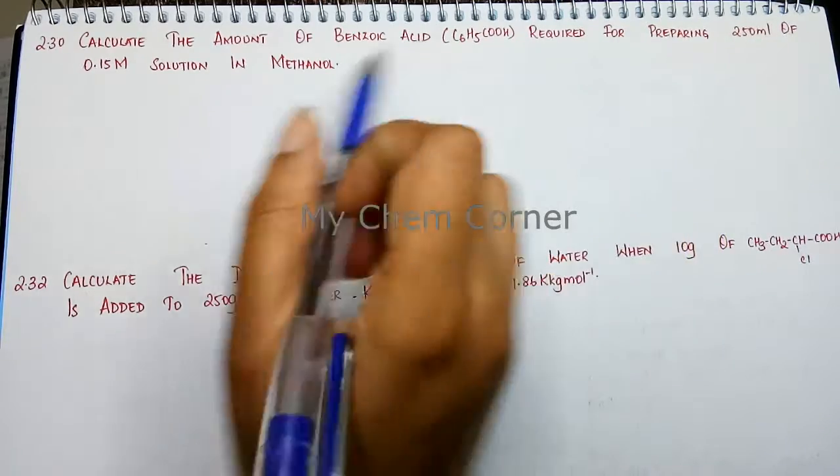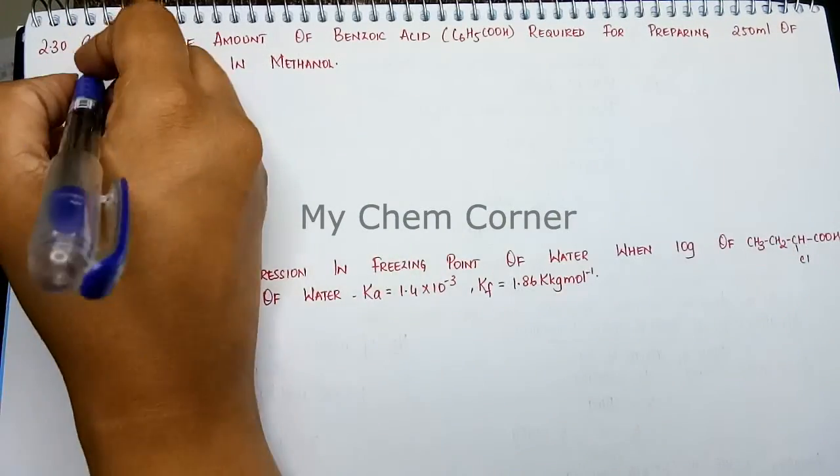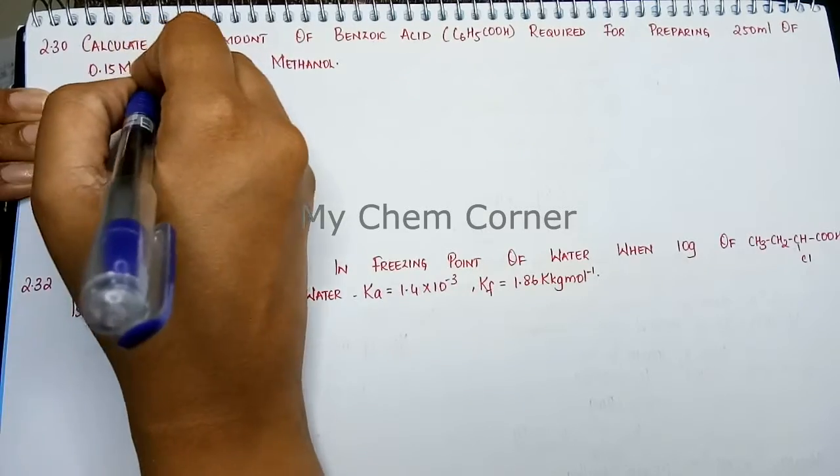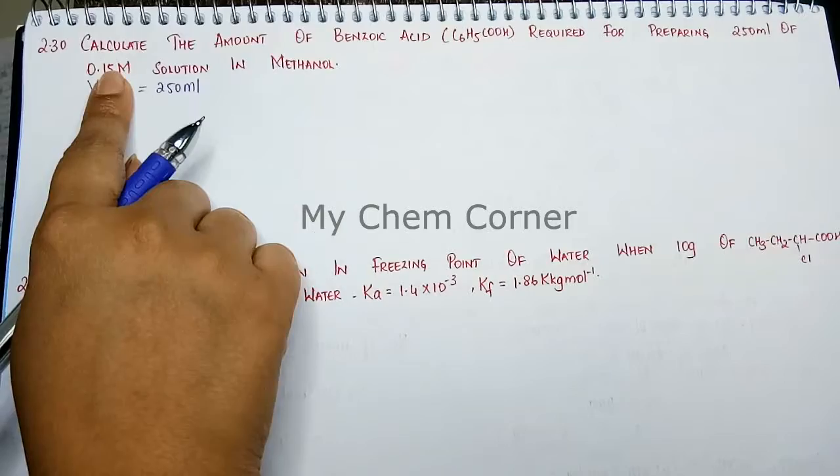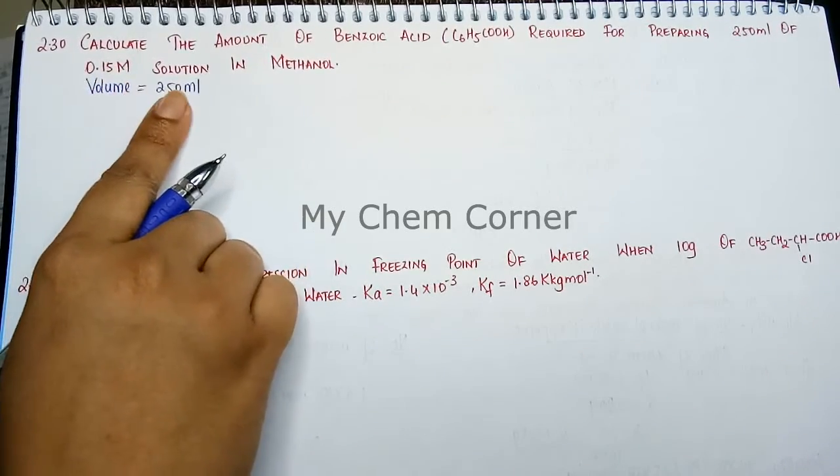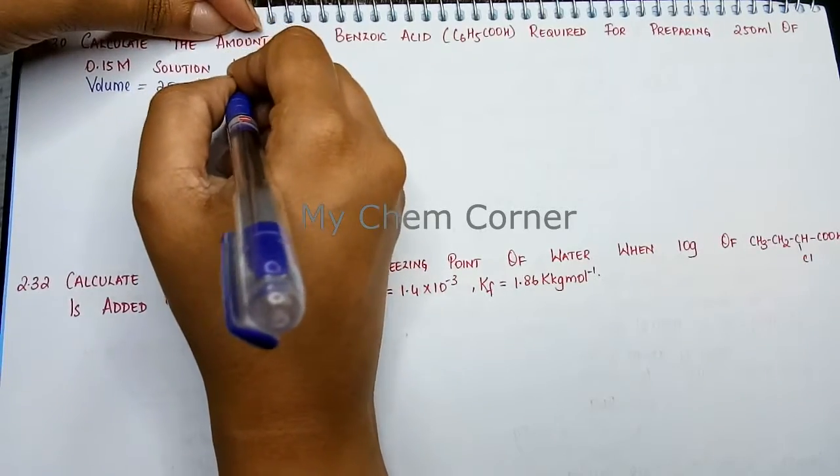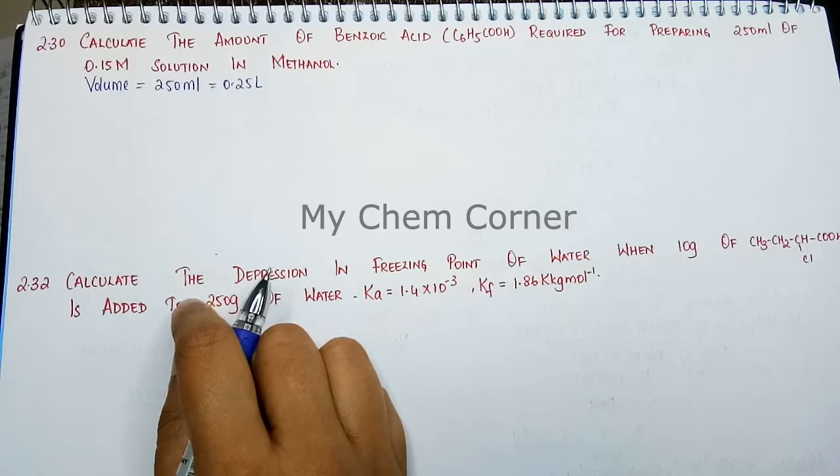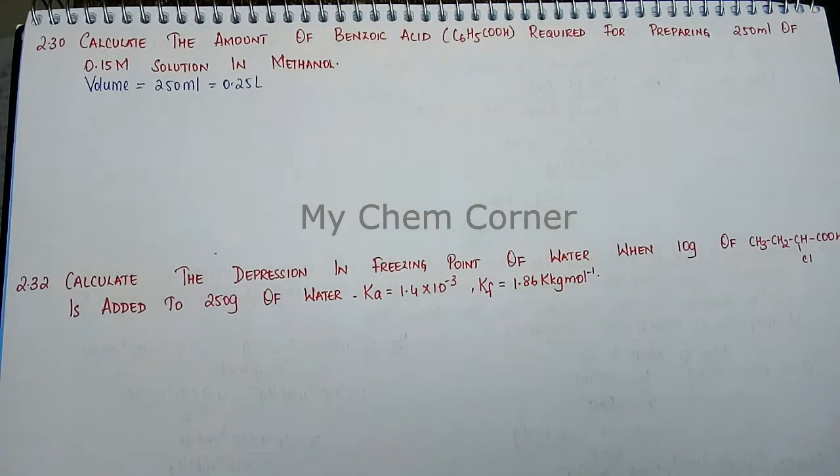First, let's write down what is given. We have the volume, which is 250 ml. Since we're looking at molarity, this should be converted to liters, so it becomes 0.25 liters. Next, we have the molarity, represented by capital M.